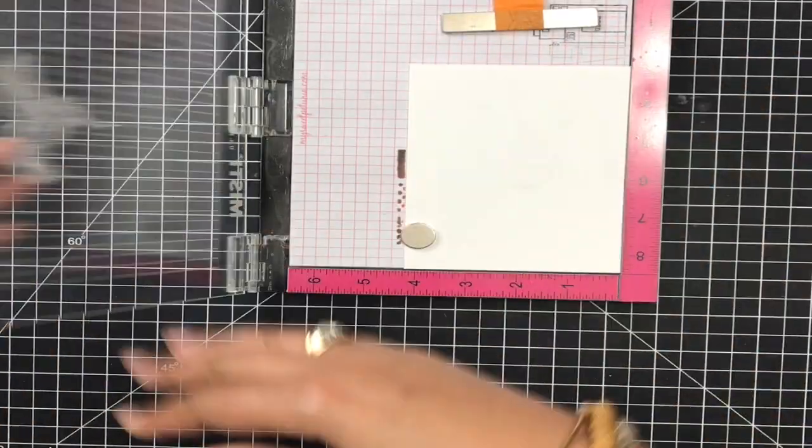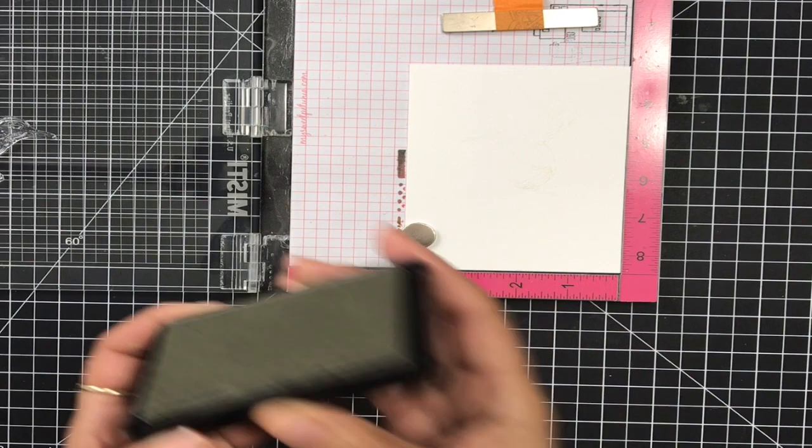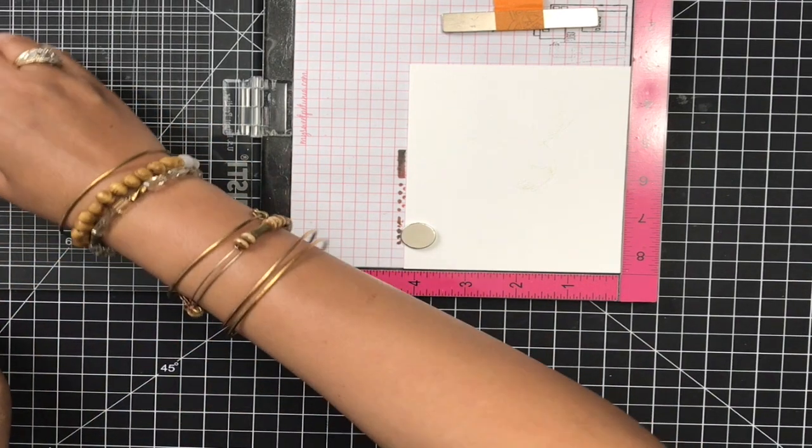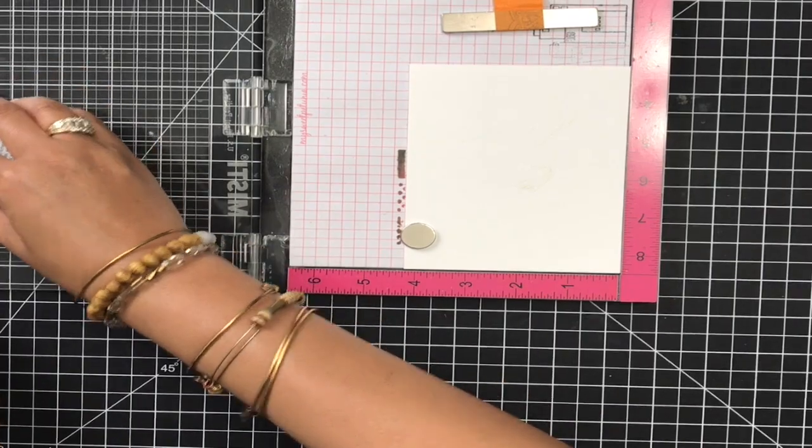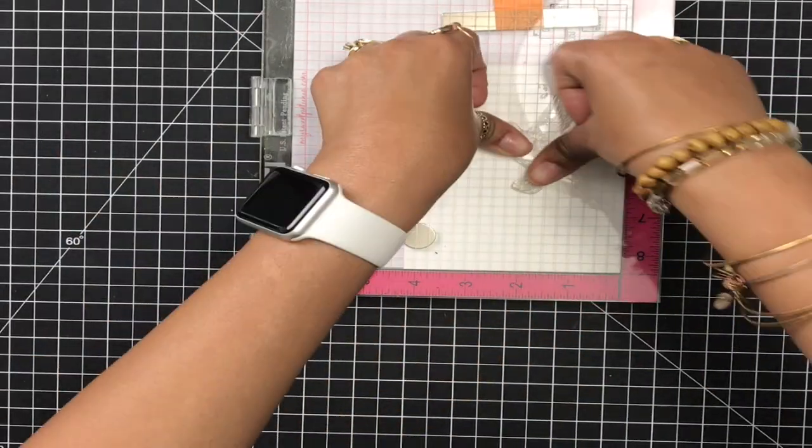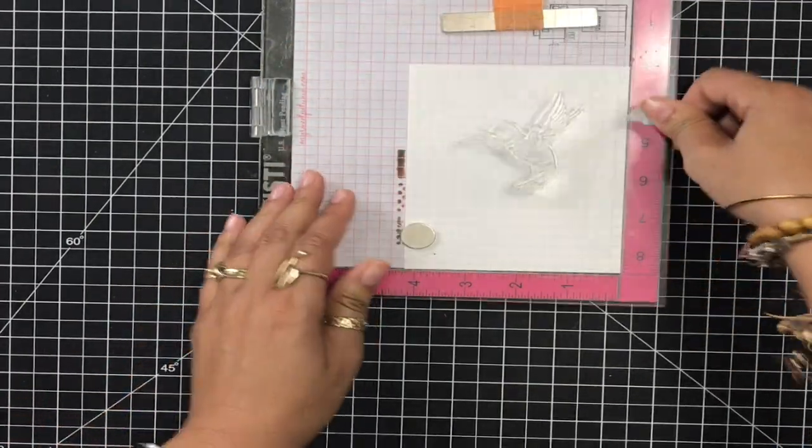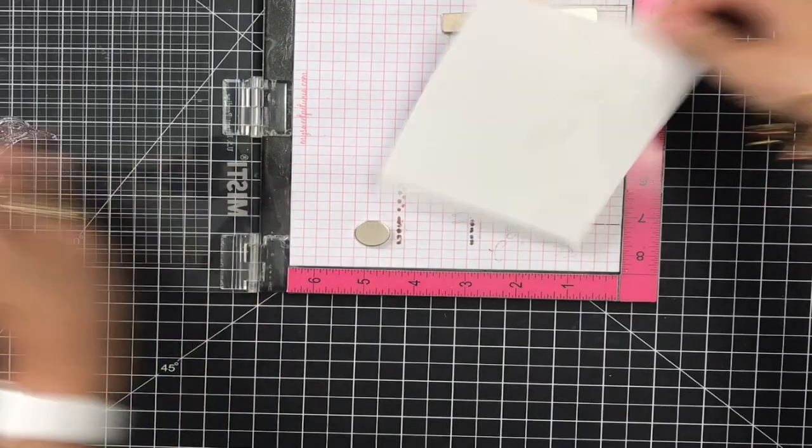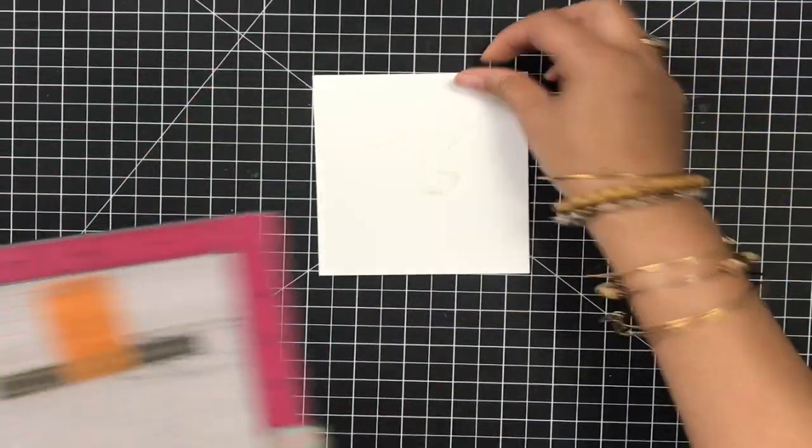I went ahead and inked up this image and you just want a light impression of this ink. Now, I'm going to stamp it twice. Since I'm going to be on camera doing this, it's going to show up very light. So, I'm just going to double stamp this just so you guys can see on camera the detail it's going to give.